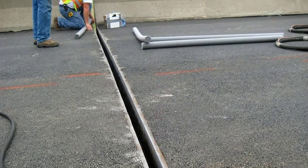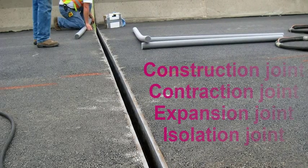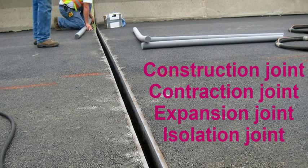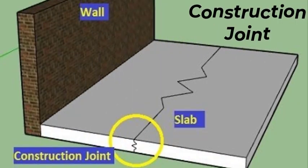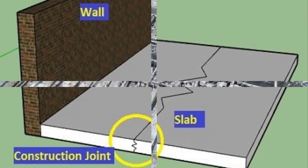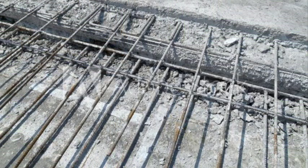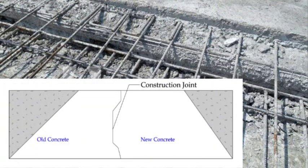There are four types of joints which are used in civil construction field. Construction joints in the concrete structure are designed to separate the large concrete mass work into a divisional pattern.